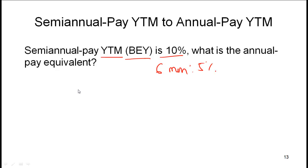So effectively, how much are you getting in a year? You are getting 1.05 squared because there are two six-month periods in a year. 1.05 squared is 1.1025, so effectively this means that you are getting 10.25%. So this is fairly straightforward - a bond which is giving a bond equivalent yield of 10% means that over the year you are effectively getting 10.25%.